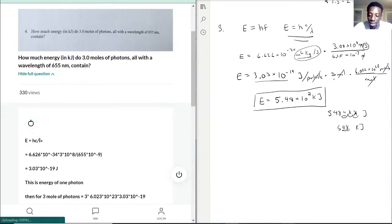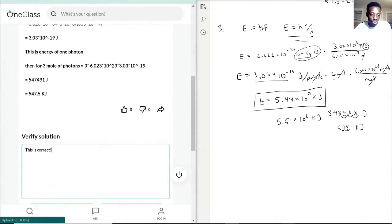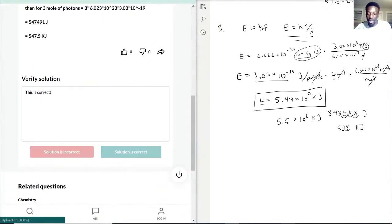But either way works. So 5.5 would probably be the better answer times 10 to the 2 kilojoules. And it does ask in kilojoules. That's why we put it there. So overall, though, this is correct. And it did get the same as us for the joules per particle. So now let's move on to question four.